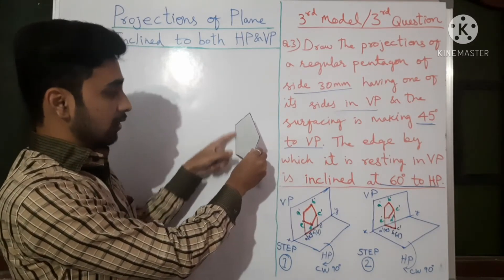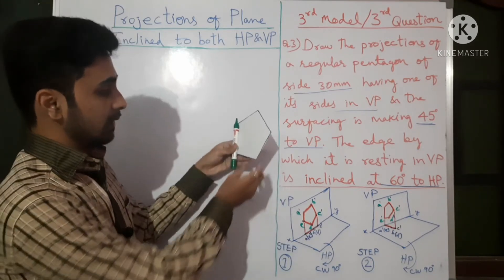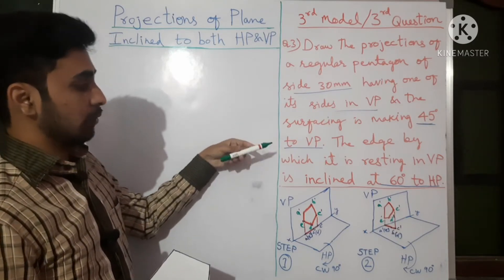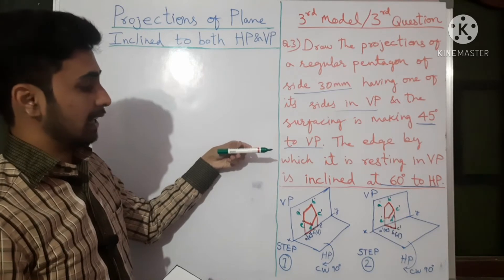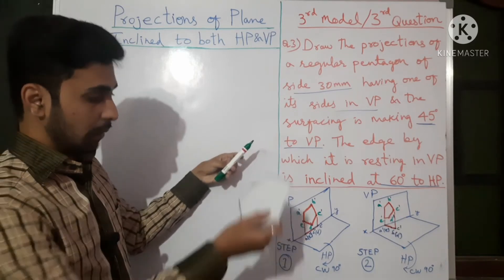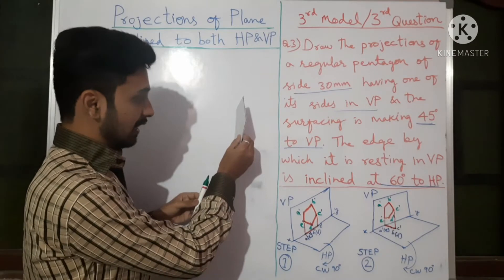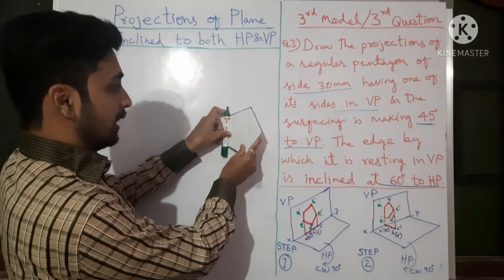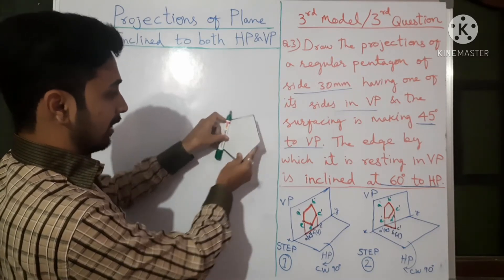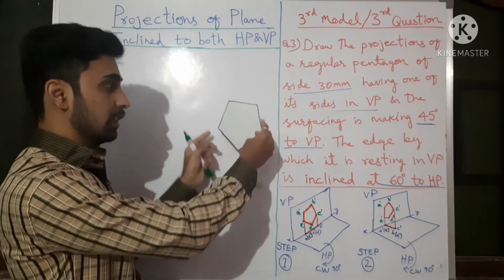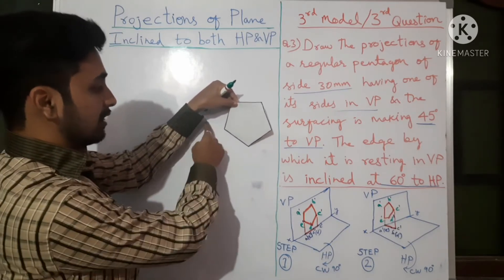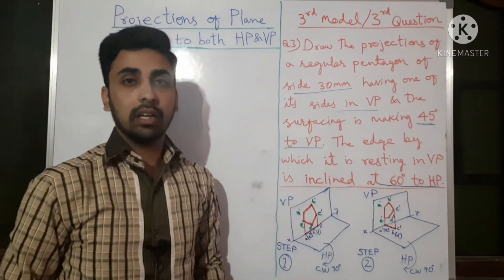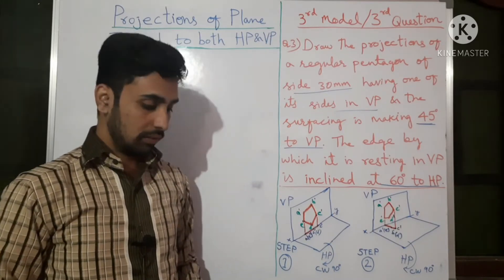Imagine this edge as a pen. If you see this pen with respect to HP it is perpendicular; if you rotate it, it becomes parallel; now it is inclined. Coming back to the problem — the edge resting in the VP, where the surface is making 45 degrees, should be inclined with respect to HP. We have the facility to tilt it in either direction in projection of planes, so this angle with respect to HP is 60 degrees.